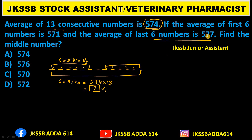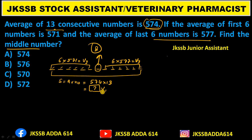So V3 is obtained by multiplying 6 by 577. The question asks us to find the middle number. V1 is the total sum of all 13 numbers. V2 is the sum of the first 6, and V3 is the sum of the last 6. Add V2 plus V3 to get the sum of 12 numbers.